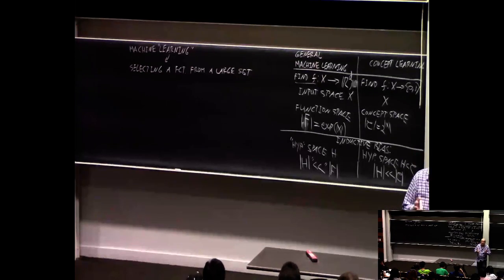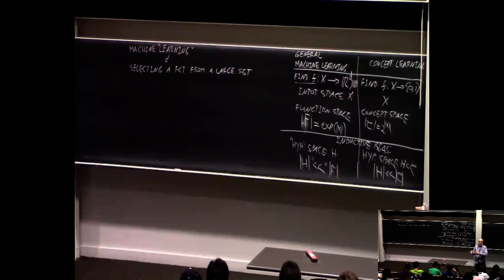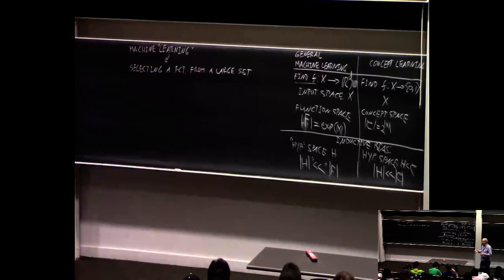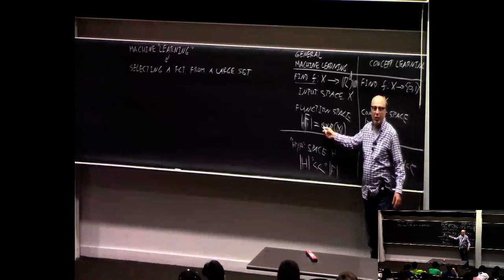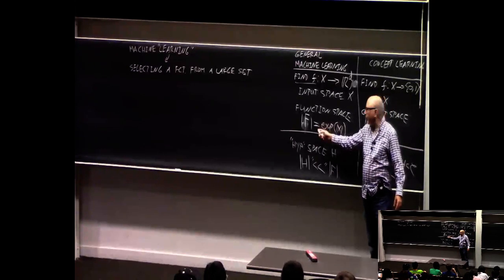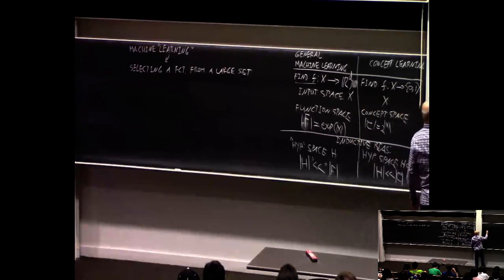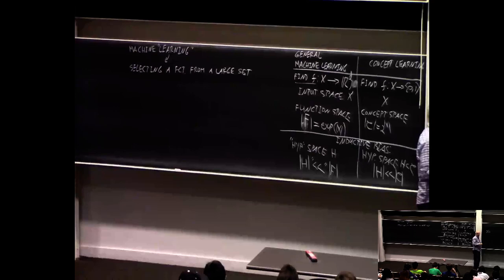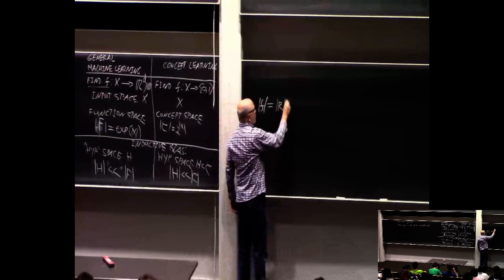How large is this function space? The function space is always exponential in the input space. The number of functions possible from a domain D to a range R is the size of the range raised to the power of the domain. If the domain is X the input space, and the range is 10 possible categories, then the number of functions is 10 to the power of the size of X.